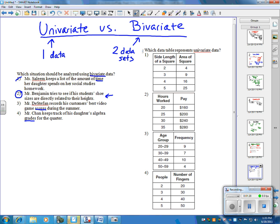But with two, he's trying to see if the shoe sizes, which are measurable, are directly related to their heights, which is another measurable set of data. So, for this reason, two is going to be our answer. Two has the bivariate data.